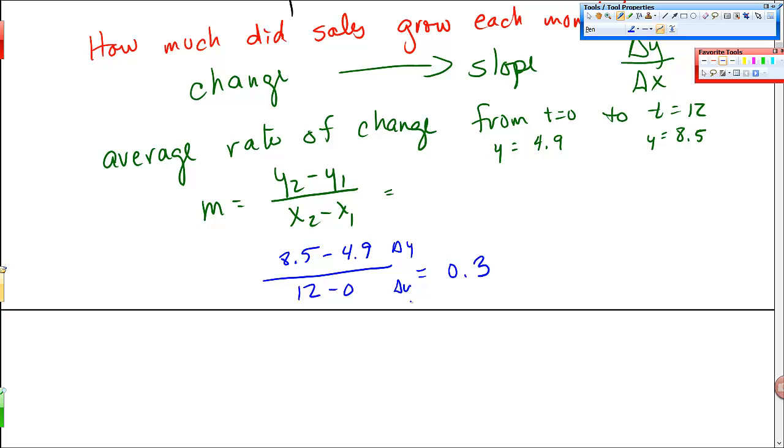So 0.3 is 0.3, and then I have, this is change in y over change in x. So it should be a change, 0.3 in growth, right? It's positive 0.3, 0.3 million per, and on the bottom, this is an x, per, and I have months, per month.